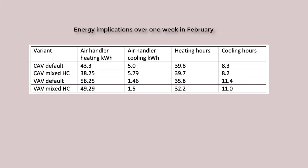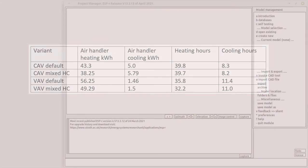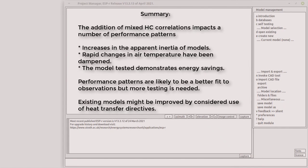Here is a table summarizing some of the energy implications of including mixed heat transfer coefficients in models with CAV or VAV. Adding mixed heat transfer correlations has increased the apparent inertia of the models. A lot of the ratcheting of temperatures has been dampened down. Probably these patterns are a better fit to observations. A review of existing models might show that some of them would also be improved by considered use of heat transfer directives.